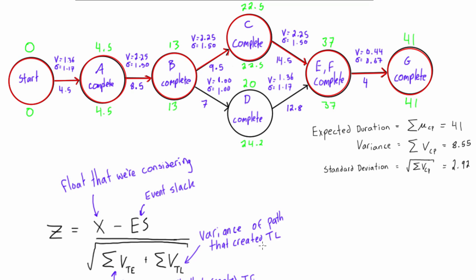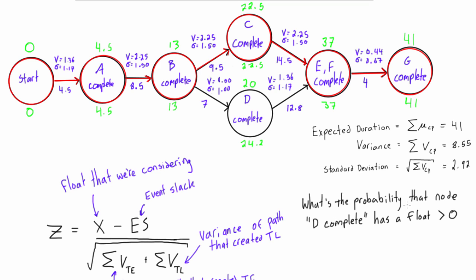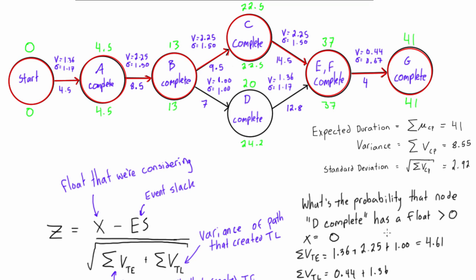Now let's do an example. What is the probability that node D complete has a float greater than 0? We need to fill out all the variables in the equation. X is the float we're considering, so X equals 0. The sum of variances along the TE path is 1.36 plus 2.25 plus 1.0, which gives 4.61. The sum of variances along the late time path is 0.44 plus 1.36, giving 1.8.